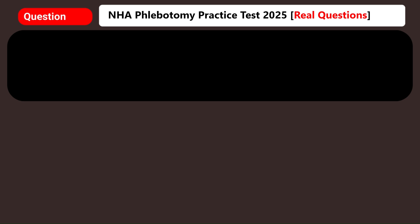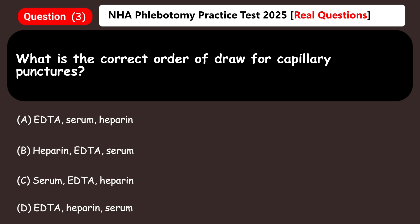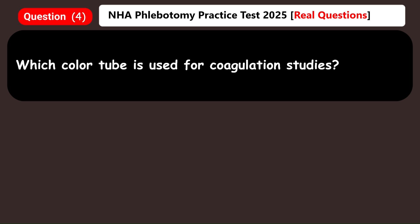What is the correct order of draw for capillary punctures? A) EDTA, serum, heparin, B) Heparin, EDTA, serum, C) Serum, EDTA, heparin, D) EDTA, heparin, serum. Answer: D) EDTA, heparin, serum.